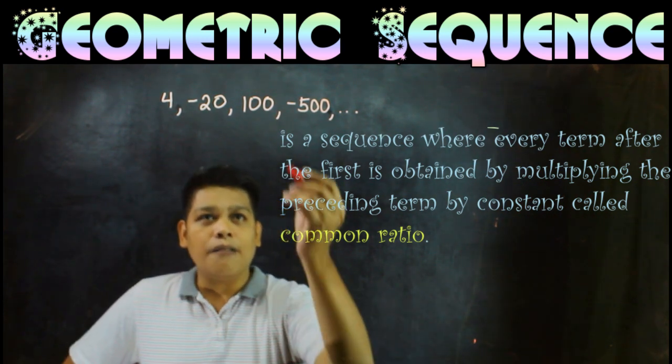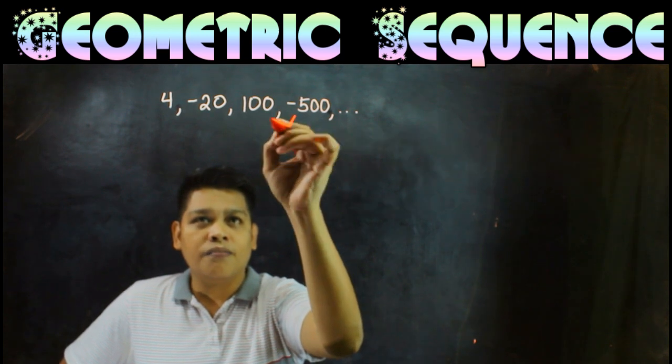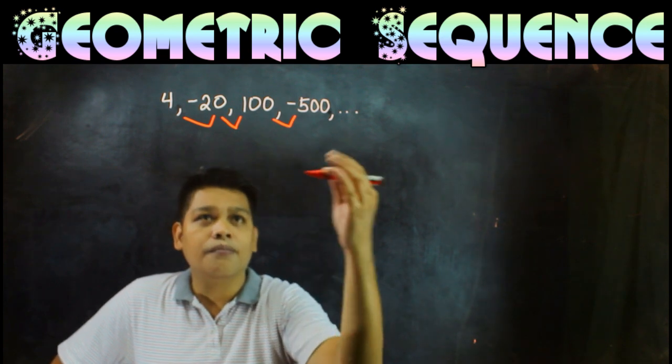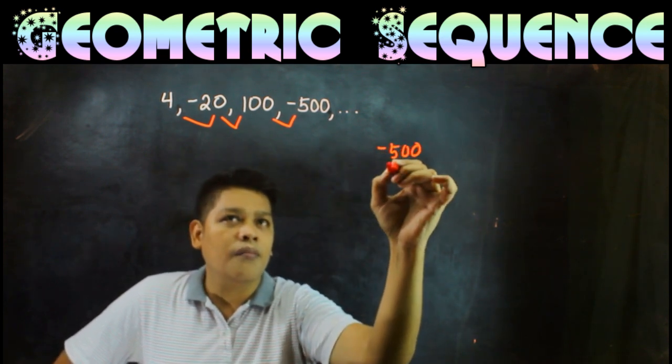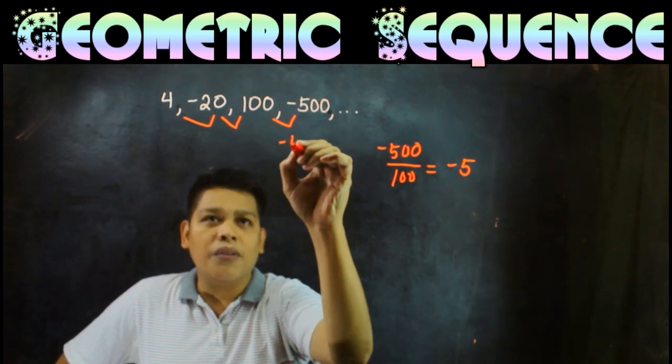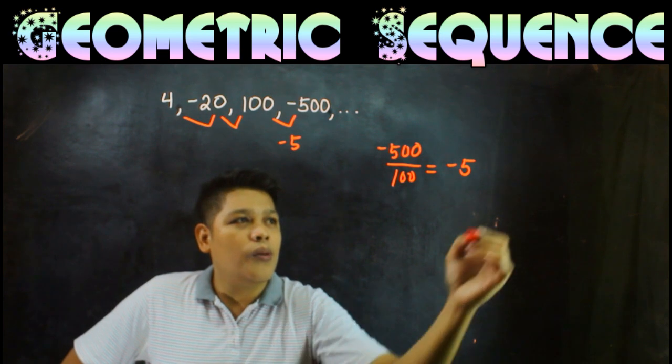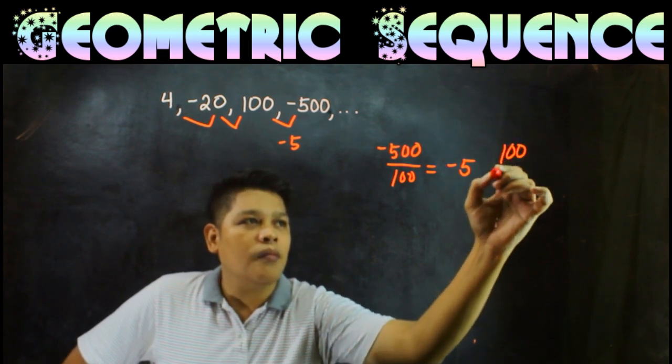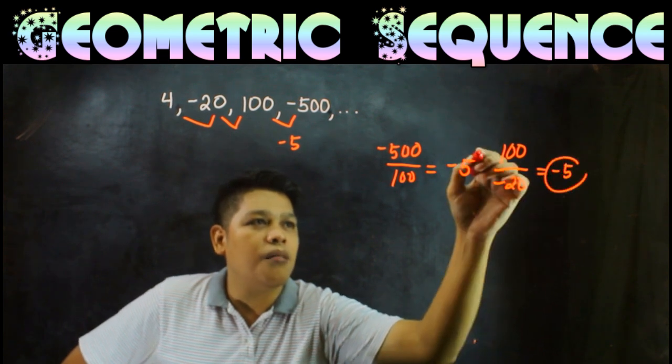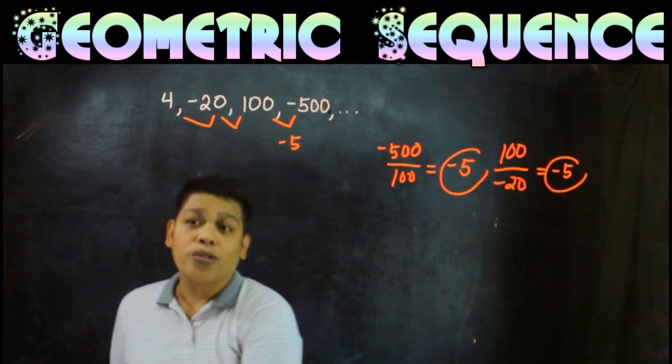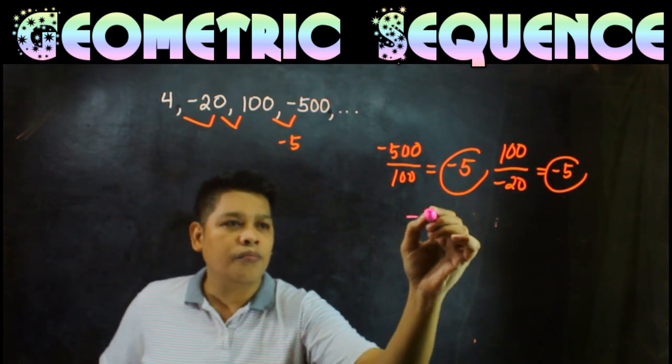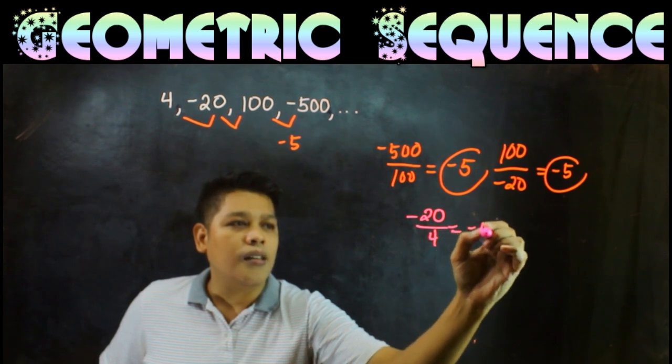Let's divide these. When we divide negative 500 divided by 100 equals negative 5. Then 100 divided by negative 20 is negative 5. To have a common ratio, let's check one more. Negative 20 divided by 4 is negative 5.